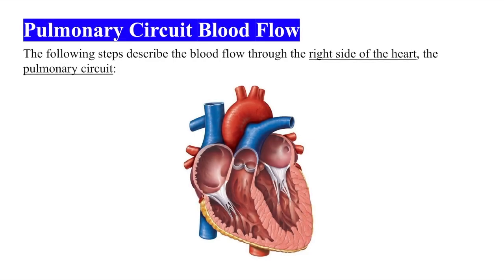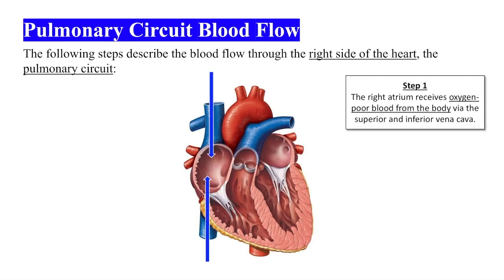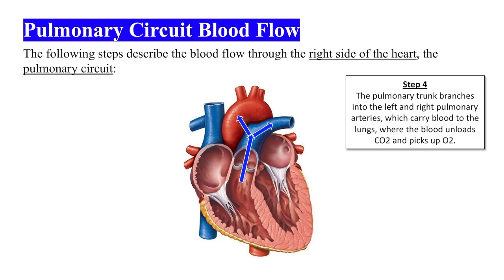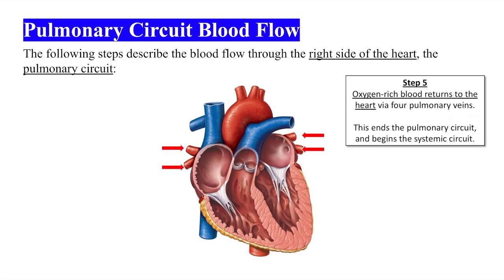The following steps describe the blood flow through the right side of the heart, the pulmonary circuit. Step 1: The right atrium receives oxygen-poor blood from the body via the superior vena cava and inferior vena cava. Step 2: From the right atrium, blood flows through the tricuspid valve to the right ventricle. Step 3: From the right ventricle, blood flows through the pulmonary valve into the pulmonary trunk. Step 4: The pulmonary trunk branches into the left and right pulmonary arteries, which carry blood to the lungs, where the blood unloads carbon dioxide and picks up oxygen. Step 5: The now oxygen-rich blood returns to the heart via four pulmonary veins.